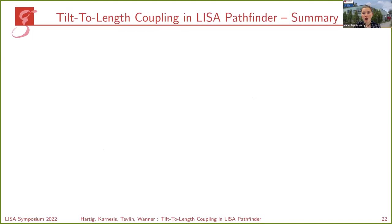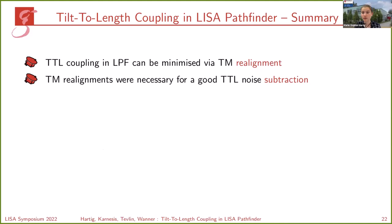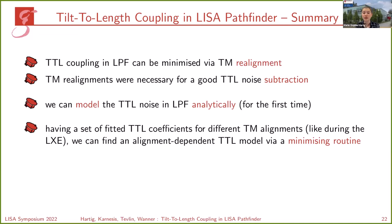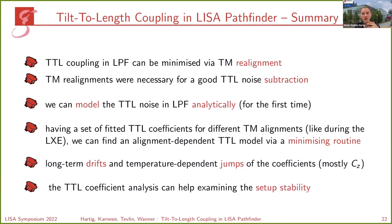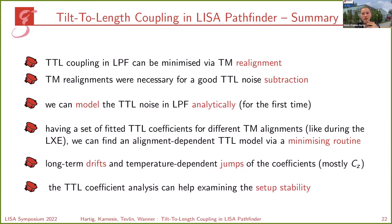Let me summarize. We now know that tilt-to-length coupling in LISA Pathfinder can be directly reduced by a dedicated test mass realignment, which is also necessary for a good tilt-to-length noise subtraction. We have for the first time an analytical tilt-to-length coupling model for LISA Pathfinder. We can find a comparable model from the long cross-talk experiment data using a minimizing routine. Furthermore, we know the coefficients are not stable but drift and jump due to temperature changes, and we can use the analytical model to examine the stability of the setup.